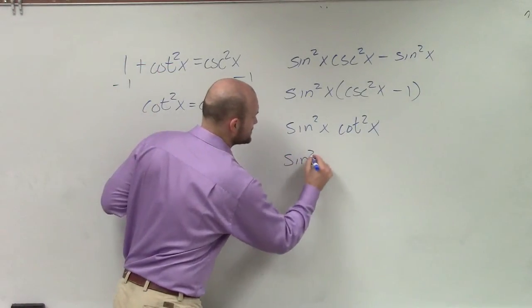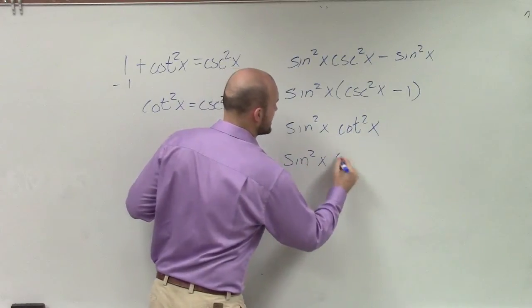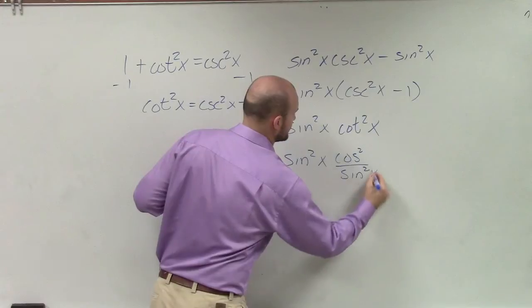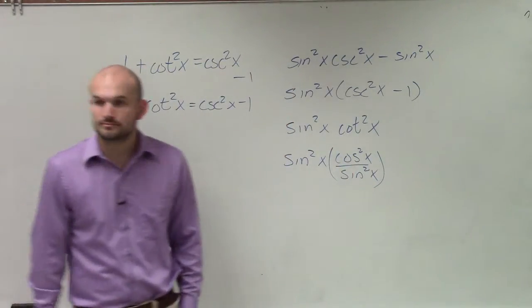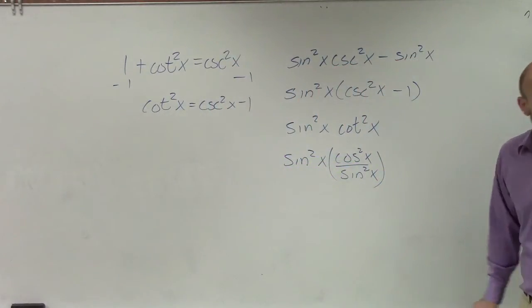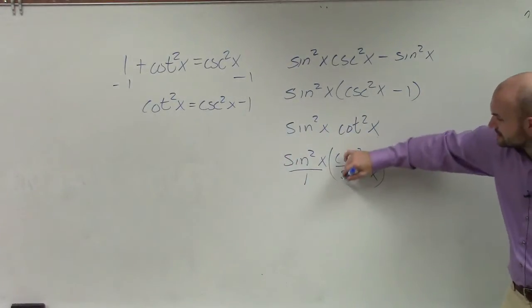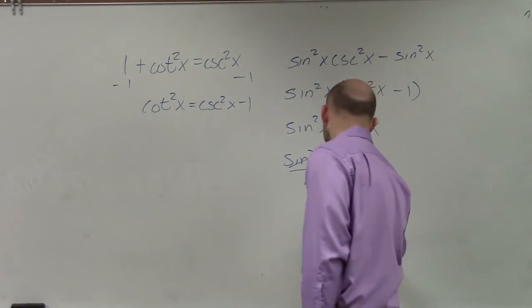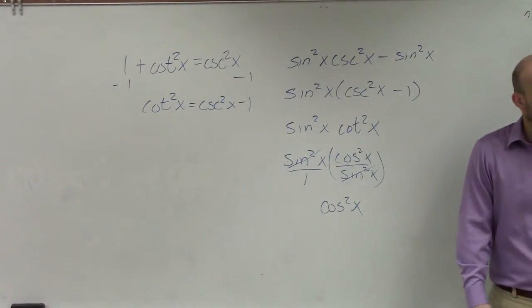So therefore, I'll have sine squared of x times cosine squared over sine squared. Now that I write it like this, you guys can see that the sines squareds will divide to 1, and we're left with cosine squared of x as our final answer.